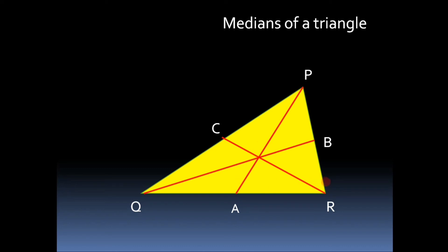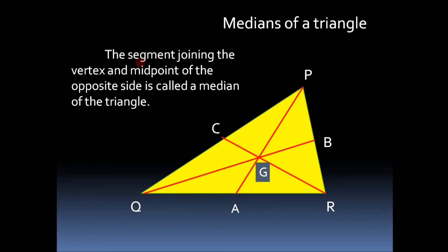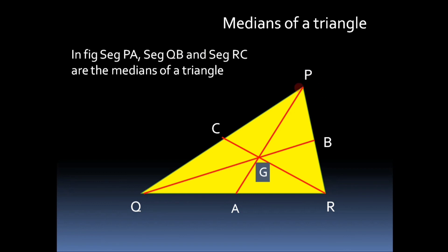As we can see, these are the three medians of triangle PQR and they intersect at one point, denoted by the letter G. A median of a triangle is the segment joining a vertex and the midpoint of the opposite side. As there are three vertices, a triangle can have at most three medians. Here, segment PA, segment QB, and segment RC are the medians of triangle PQR.